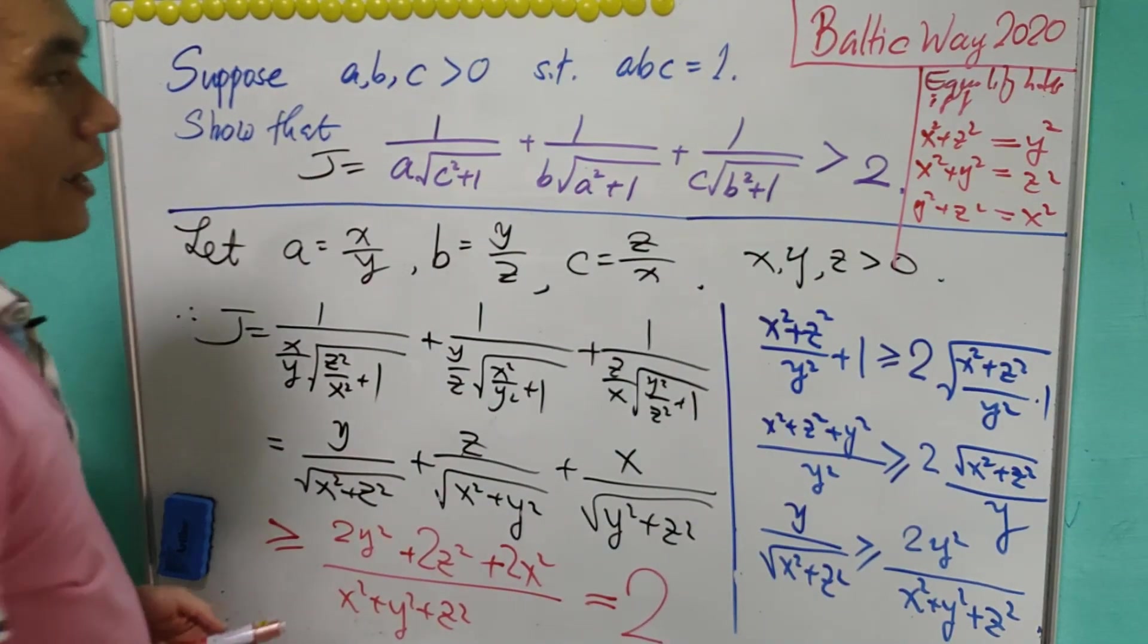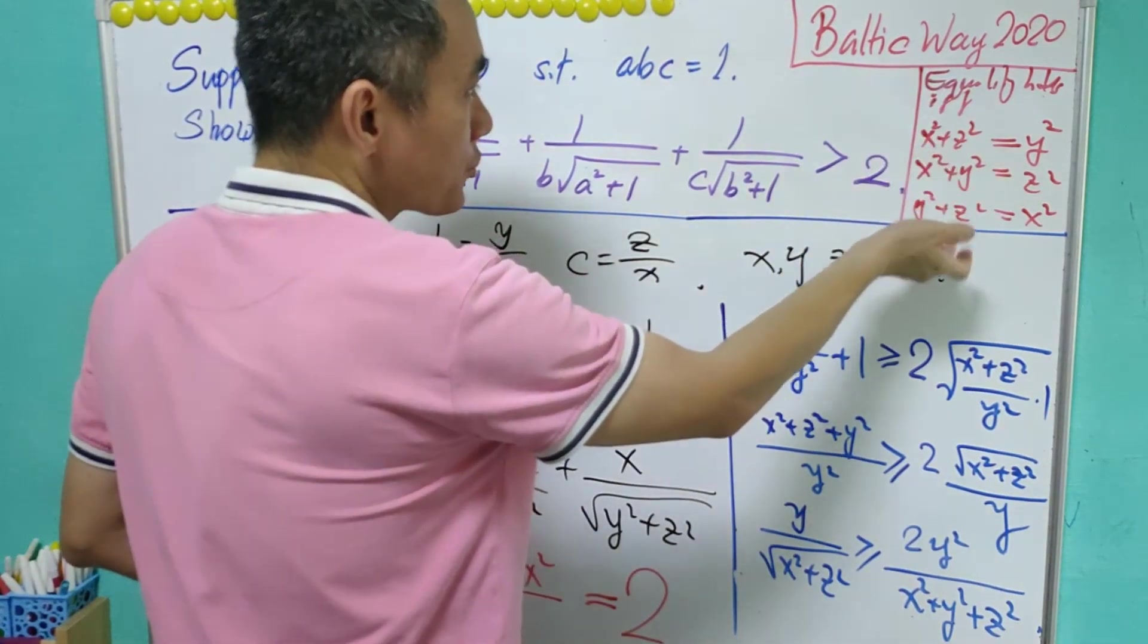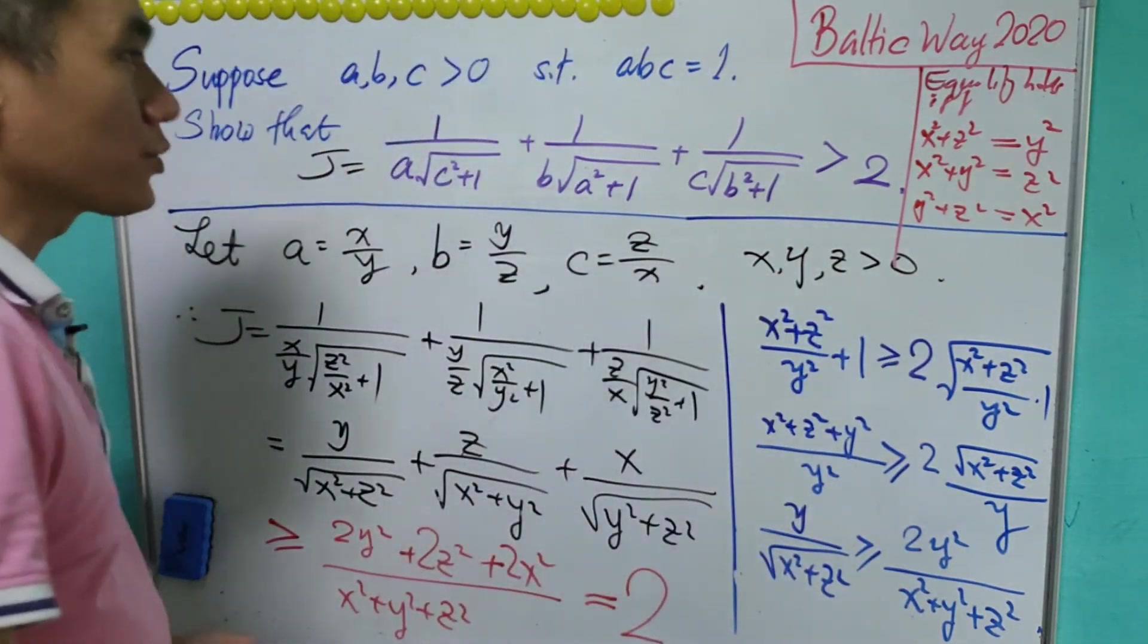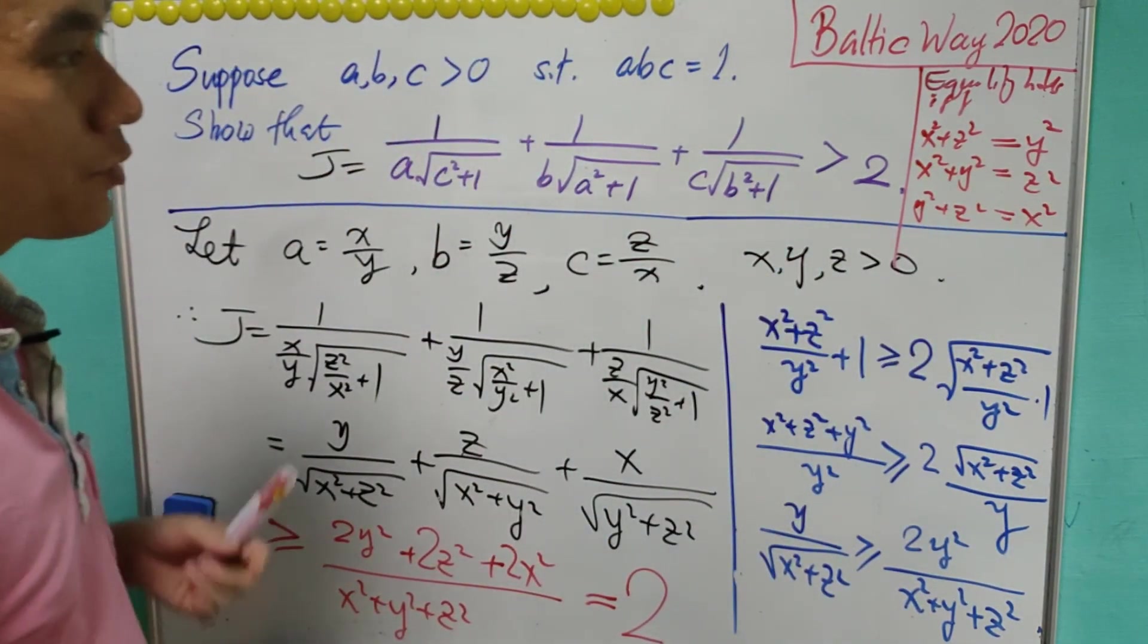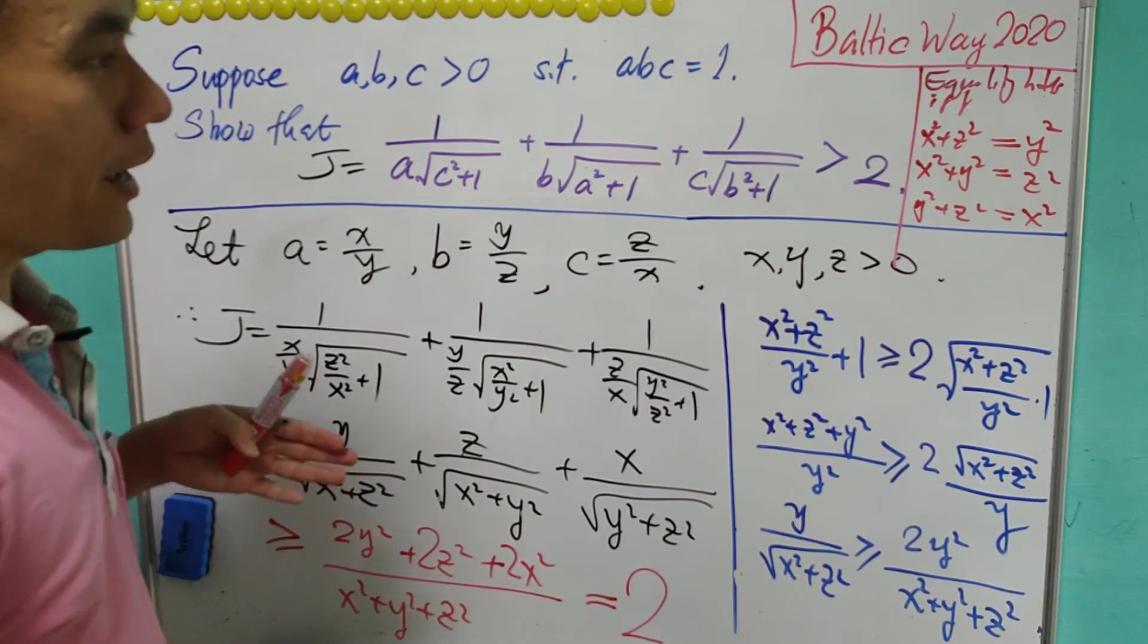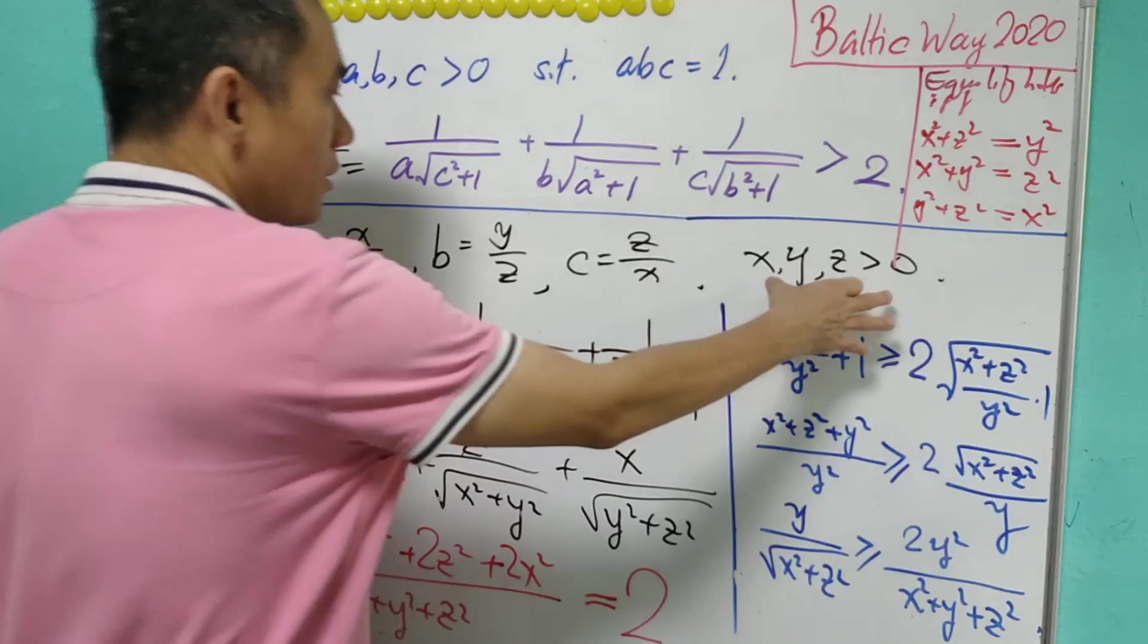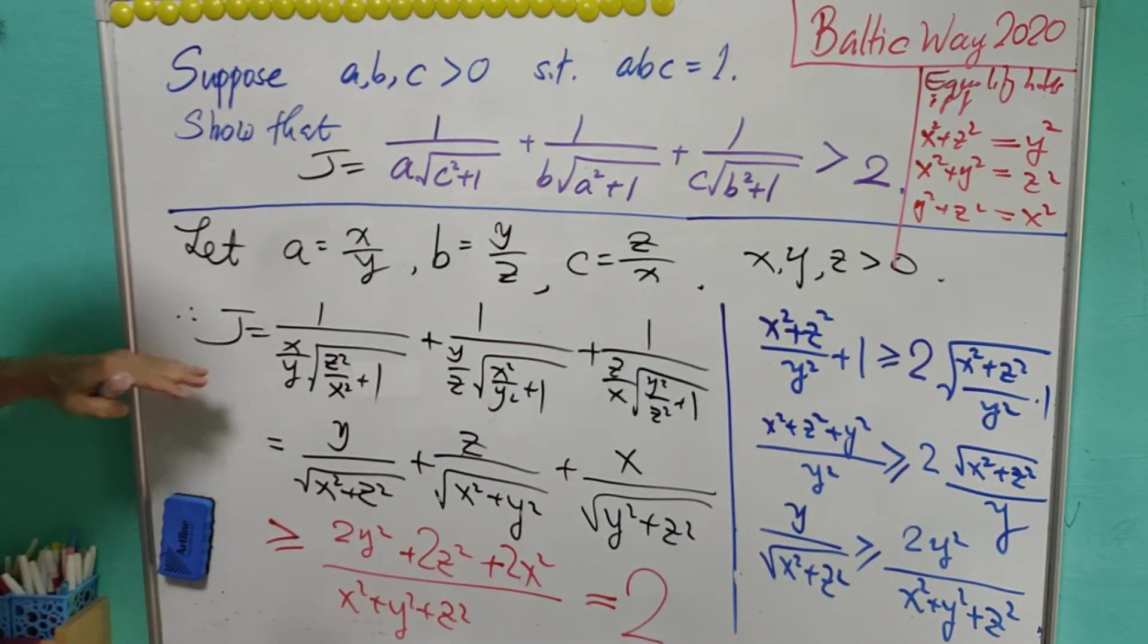And this will actually mean that double the sum of x squared, y squared, and z squared equals the sum of x squared, y squared, z squared. So it means that there's only one case: all of x, y, z must equal 0. And this is a contradiction because x, y, z are positive. It means that J never equals 2, and hence J is greater than 2.